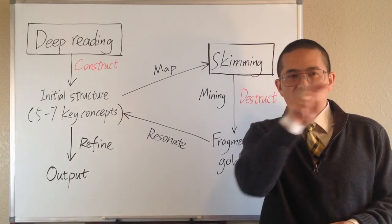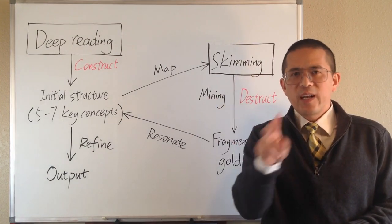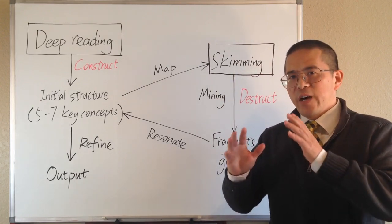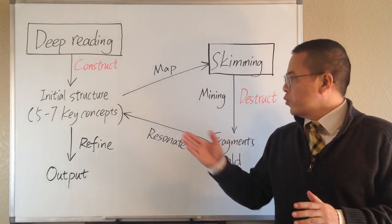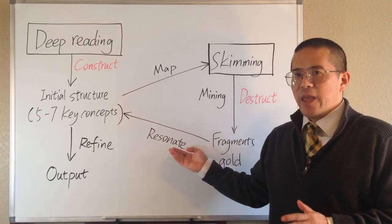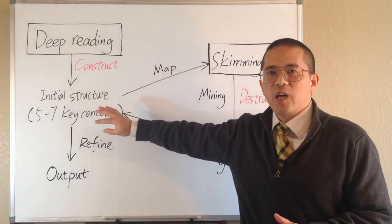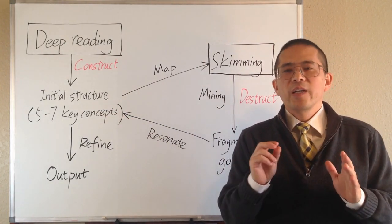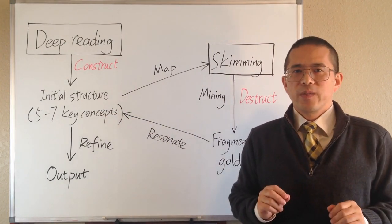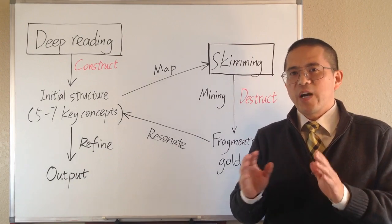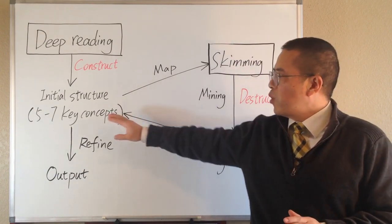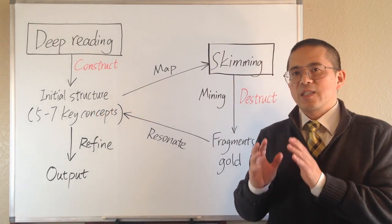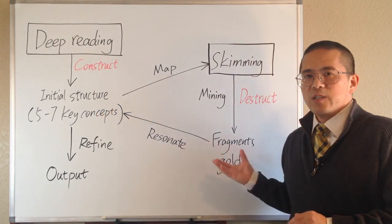When we are skimming, our eyes are scanning around quickly, like a searchlight. But every time when we find an interesting idea that we can resonate with and can relate to one of the key concepts, we should pause and write it down in our notebook. It is important to classify these new ideas and take notes around the related key concepts, so that later it is easier to organize these new ideas.